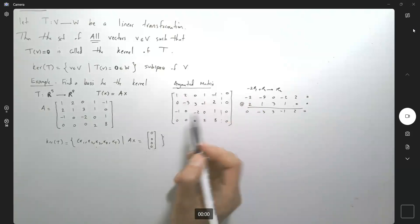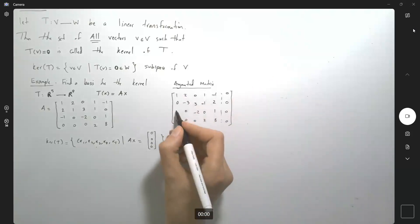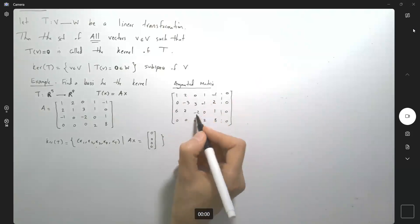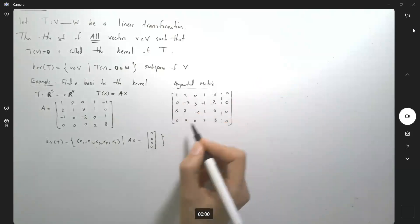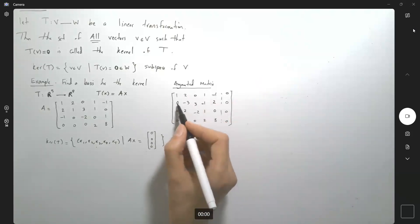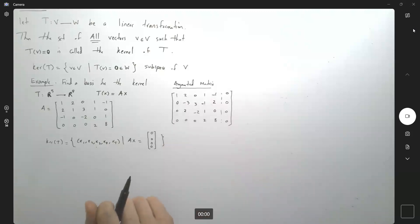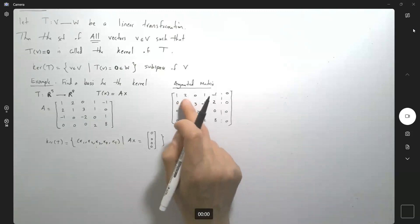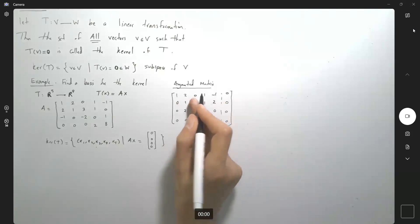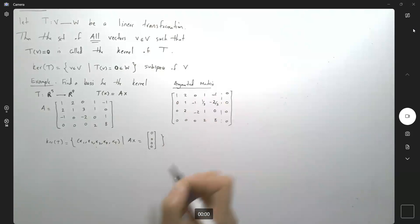Adding those two rows together, so far we get 0; 2 plus 0 is 2; 0, negative 2, and then 1; 0; and 0. We can divide this row by negative 3, giving us 1, negative 1, one-third, negative two-thirds, and 0.